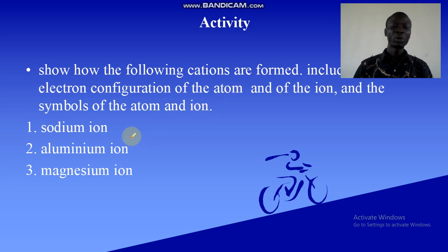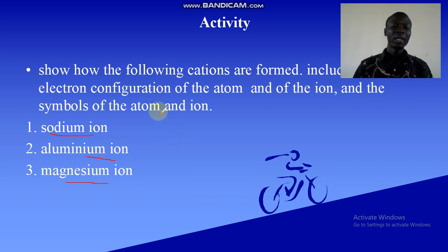You are going to complete the activity where you show how each of these ions are formed: sodium ion, aluminium ion, and magnesium ion. In the next lesson we shall look at anions, which are actually the opposite of cations. Thank you and have a blessed time.